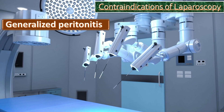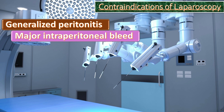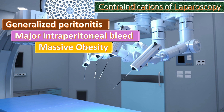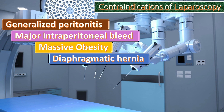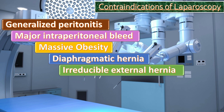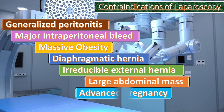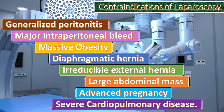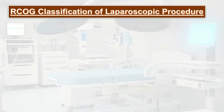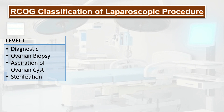Contraindications of laparoscopy include generalized peritonitis, major intraperitoneal bleed, massive obesity, diaphragmatic hernia, irreducible external hernia, large abdominal mass, advanced pregnancy, and severe cardiopulmonary disease. Now we will talk about the RCG classification of laparoscopic procedures.